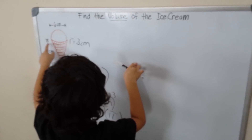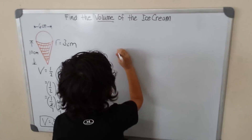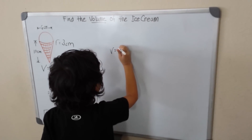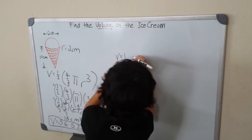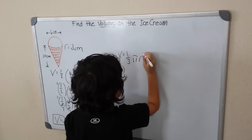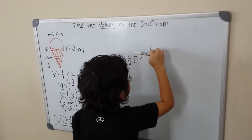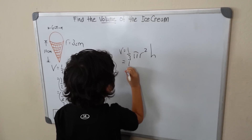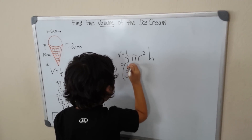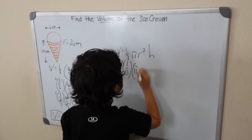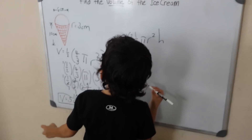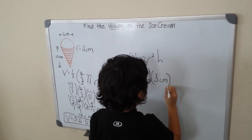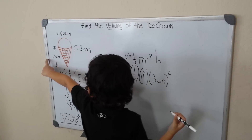Now let's find the volume of the cone. The volume of the cone is equal to 1 over 3 times pi times r squared times the height. We copy the 1 third, then pi, then r squared — r is 3 centimeters — so 3 centimeters squared, times our height which is 10 centimeters.